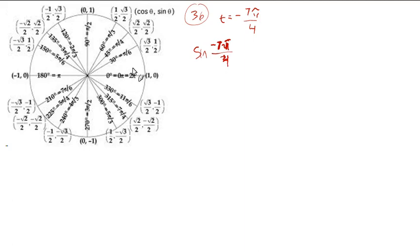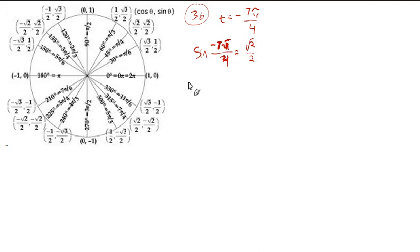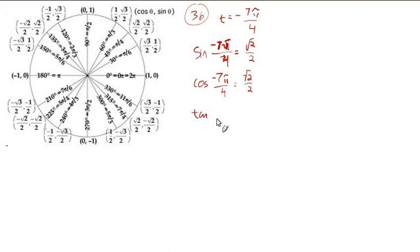Negative seven pi over four — counting back: negative one, two, three, four, five, six, seven. You can also think that a full revolution would be negative eight pi over four, which simplifies to negative two pi, and one pi over four short of that would be negative seven pi over four. The sine of negative seven pi over four is root two over two. The cosine of negative seven pi over four is also root two over two. The tangent is root two over two divided by root two over two, which is just one.